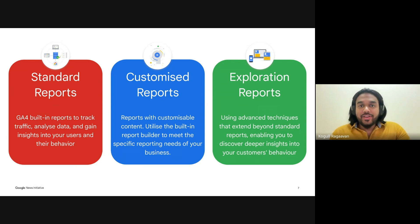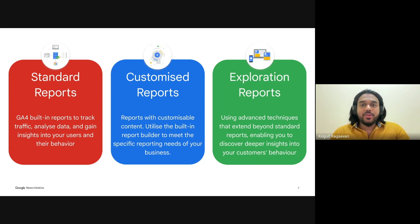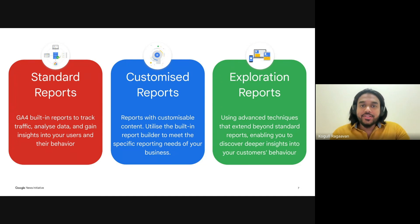Next, we have customized reports — and this is where things get really exciting. These reports allow you to tailor insights to your needs. Want to know which content category, like news, opinion pieces, or features, sparks the most engagement? Customized reports make that easy. You can create summary cards that put the most important metrics — such as average engagement or author performance — right at your fingertips, all in one place. No more digging through tabs; it's all tailored to your business goals.